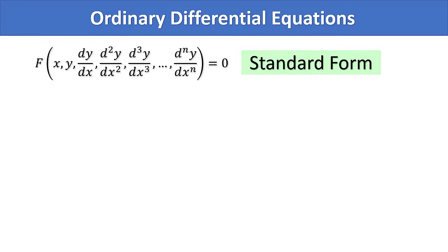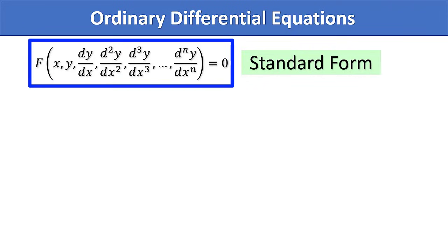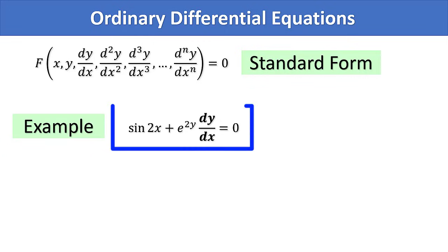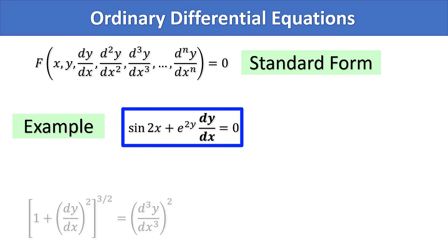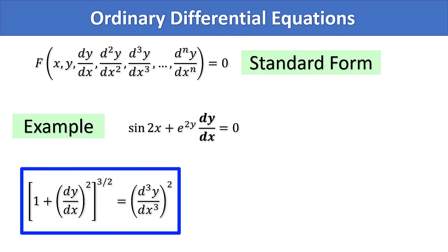The standard form of ordinary differential equation is flashed on the screen. It is nothing but an equation containing function of x, y, and derivatives with respect to x. For example, sin of 2x plus e to the 2y times derivative of y with respect to independent variable x equals 0. Another example is 1 plus the square of dy over dx, whole raised to the 3 halves, equals d³y over dx³ whole squared.